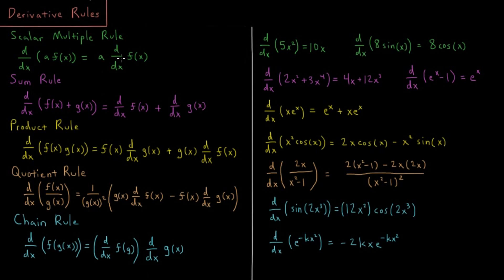As we saw in the previous video, if we have the derivative of 5x squared, we know from the polynomial rule that the derivative of x squared is 2x. So if we want the derivative of 5x squared, we take 5 times the derivative of x squared: 5 times 2x gives us 10x. Similarly, d/dx of 8 times sine x — the derivative of sine is cosine, so 8 times that is 8 cosine.